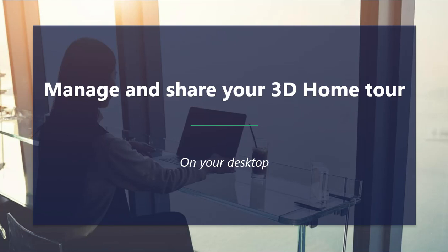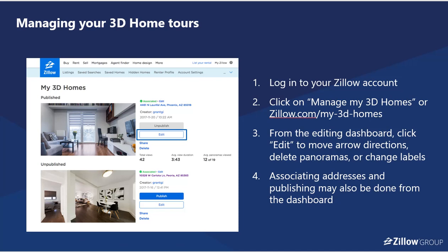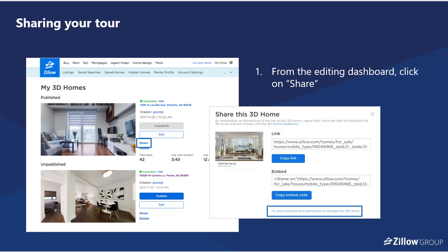Managing and sharing your 3D Home Tour: log into your Zillow account and click on 'Manage My 3D Homes' or go to zillow.com/my-3d-homes. From the editing dashboard, click Edit to move the arrow directions, delete panoramas, or change labels. Associating an address with your tour is important to do at this point if you haven't done it during capture. For sharing, we enable you to do that two ways: with a link where we provide a player that will show your 3D Home Tour, or you can take a code snippet and embed it within your website — whether your personal agent site, photographer site, or a brokerage.